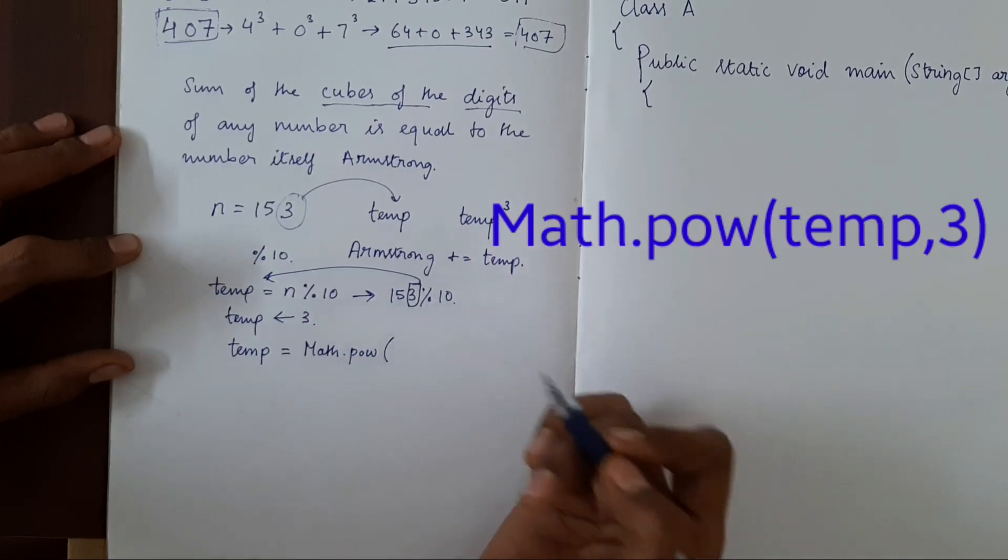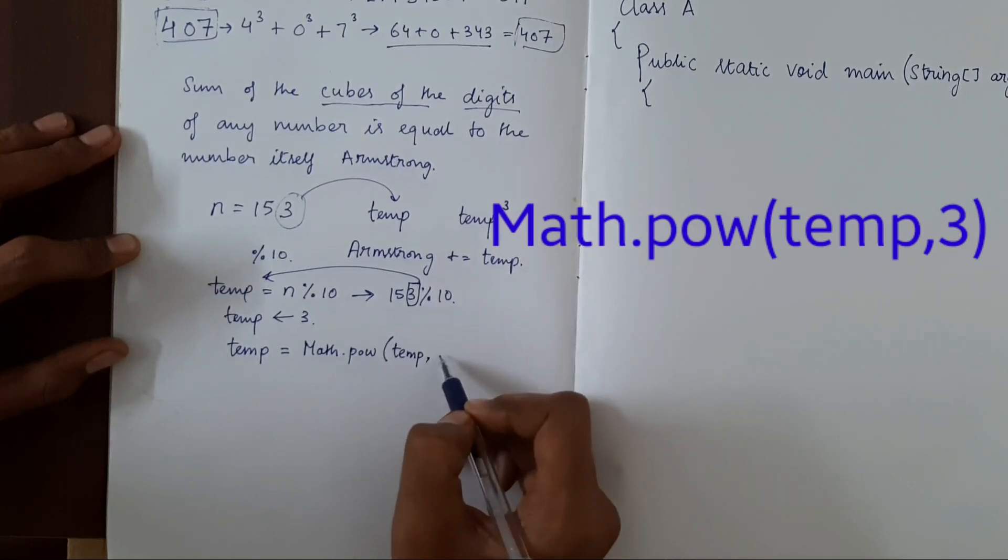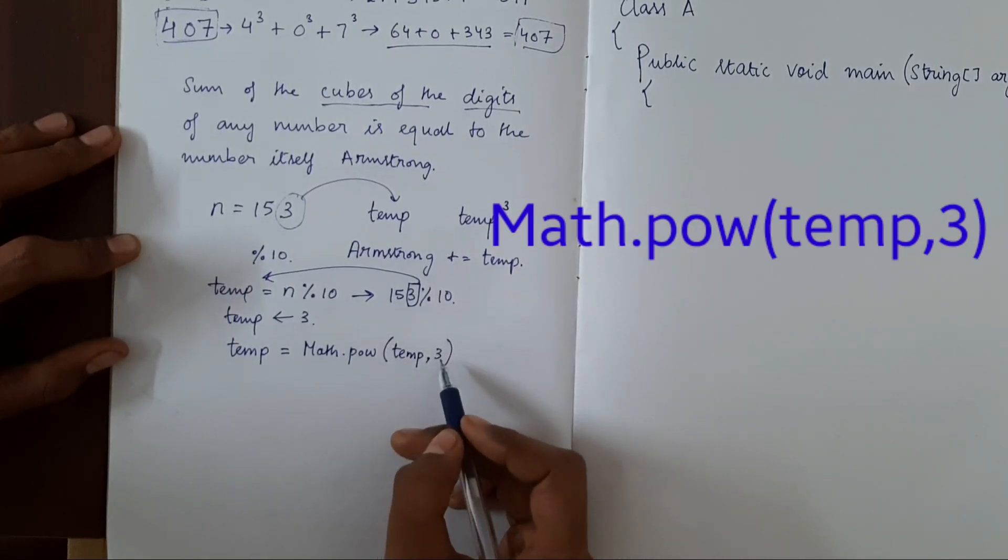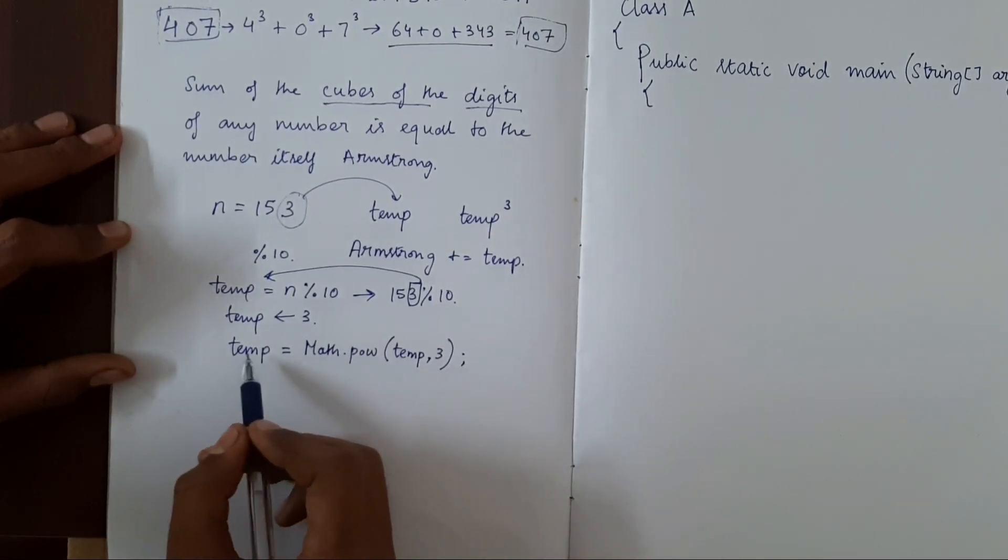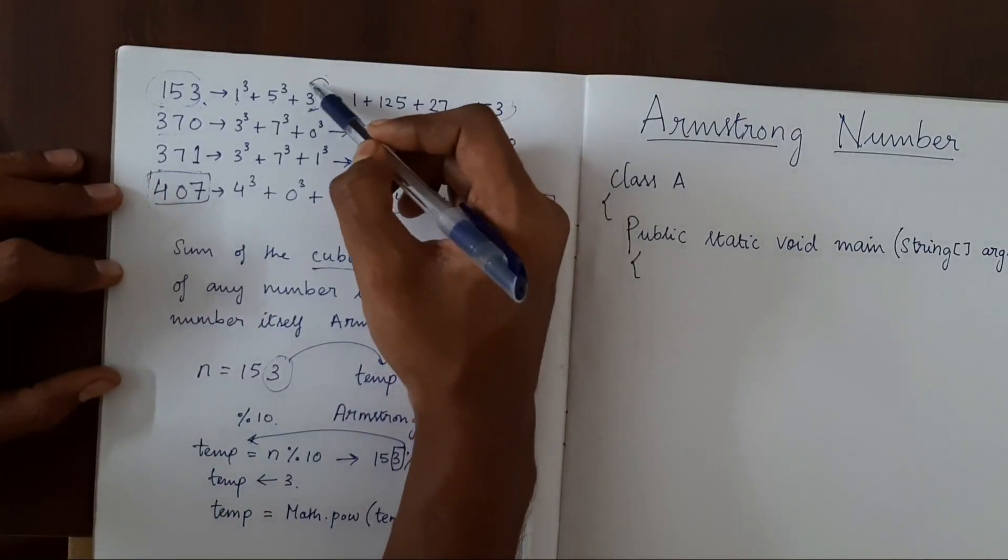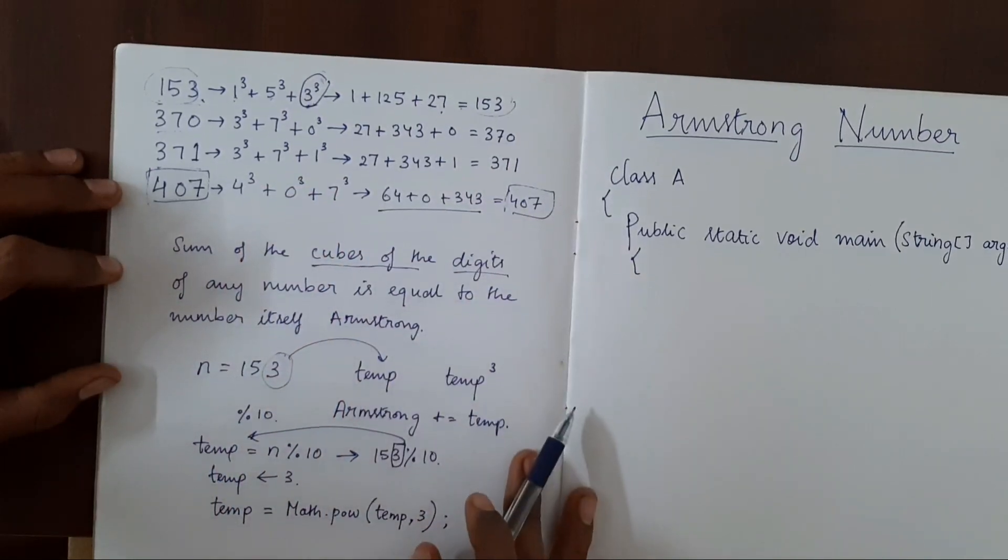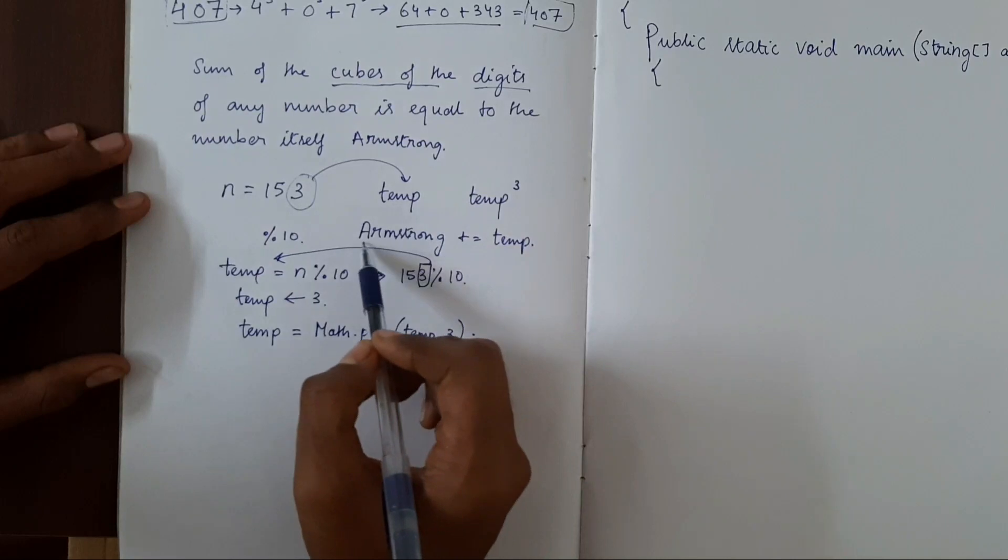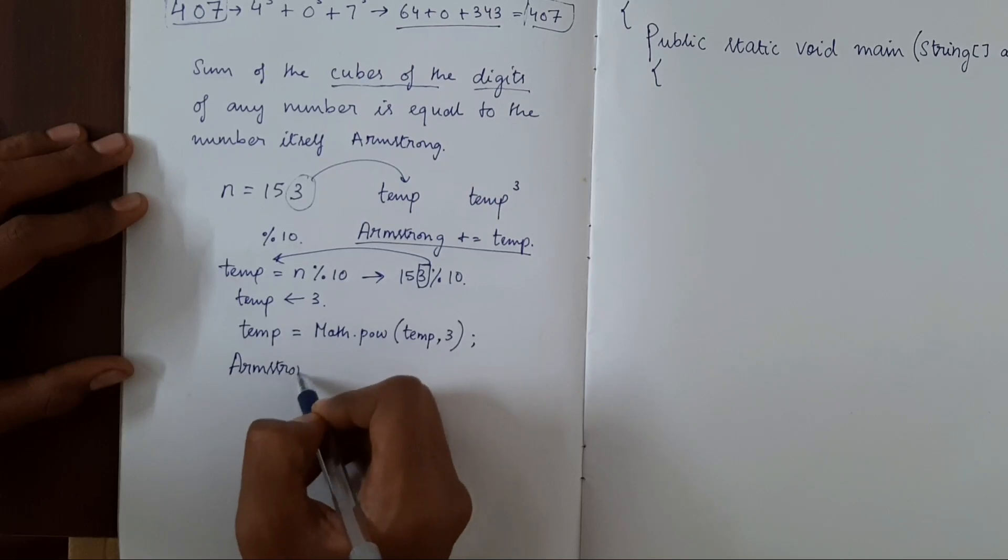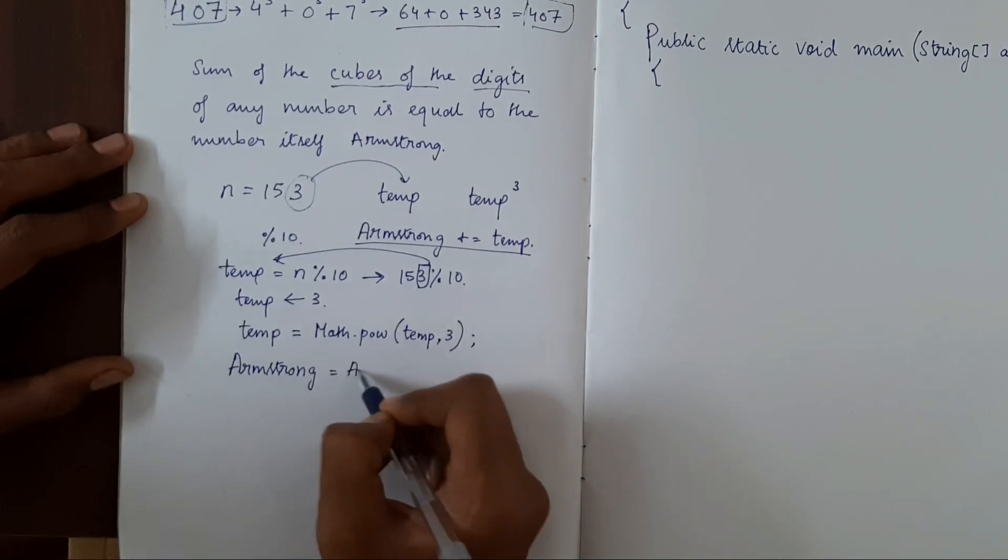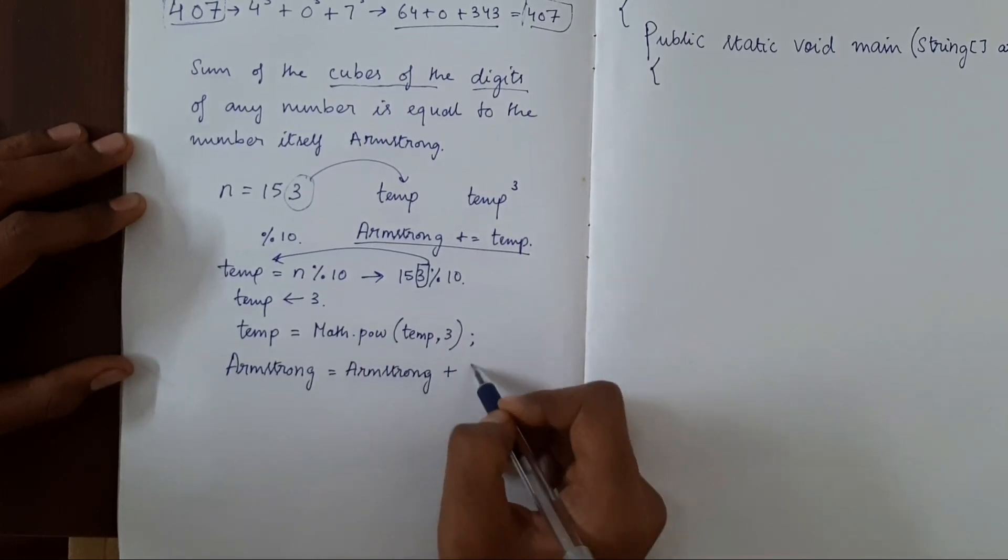Temp equal to math dot power, in short P-O-W. Now we'll do temp, the variable, and then power is 3. If you want to square it, you have to put 2. So in this case, we'll cube it. Now we have done this part. Now we have to add it into some variable. We have a variable here, Armstrong, we'll add in that: Armstrong equal to Armstrong plus temp.